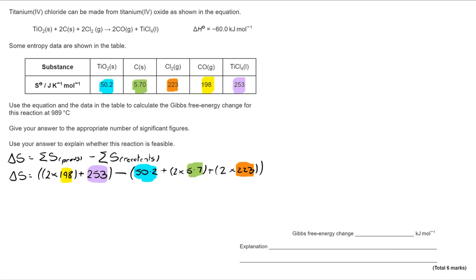So once we do that and we've calculated it through, we get a delta S value of 141.4 joules per kelvin per mole.